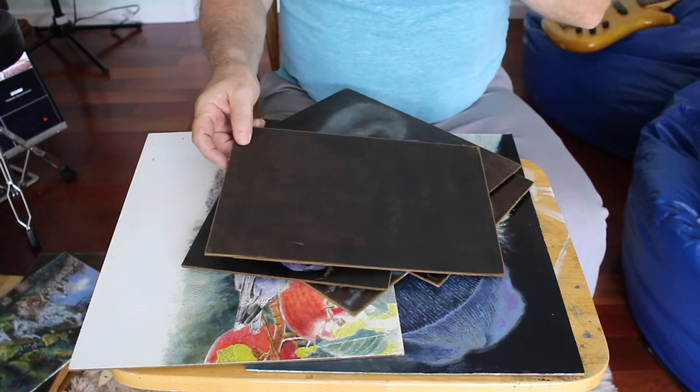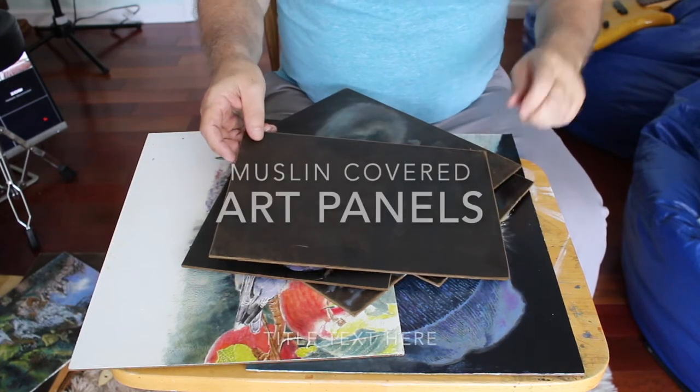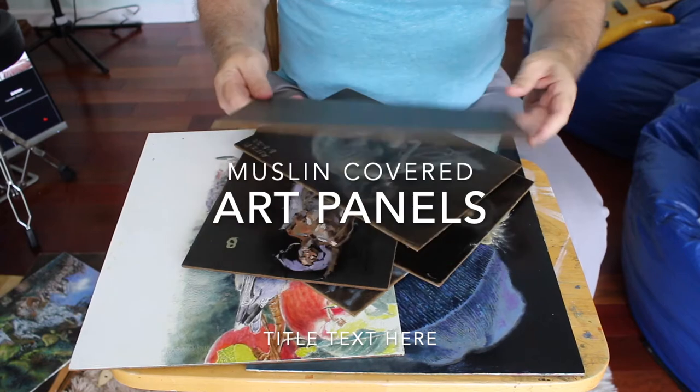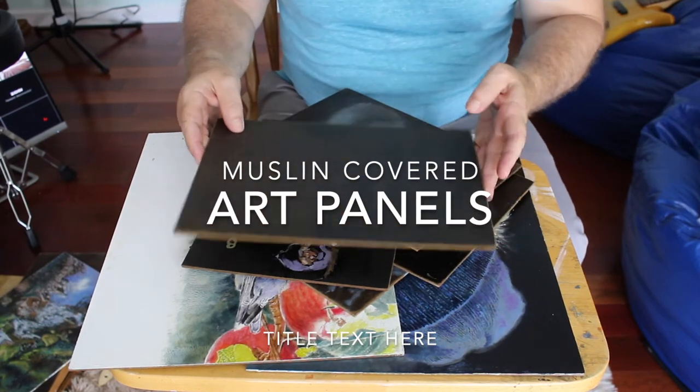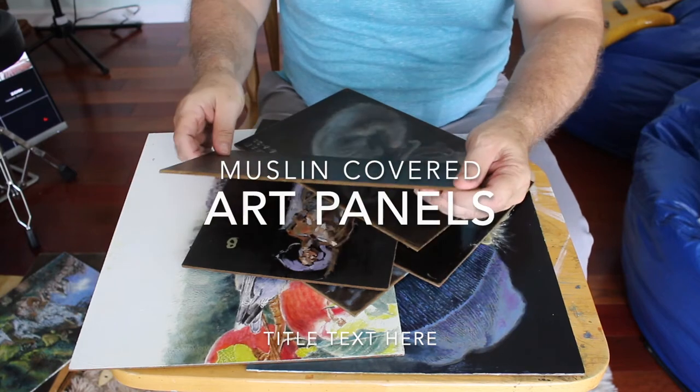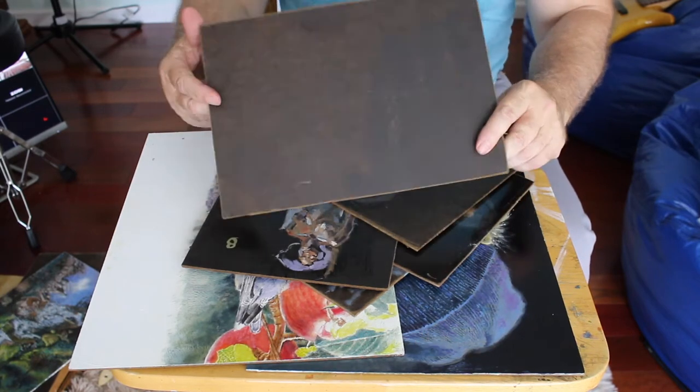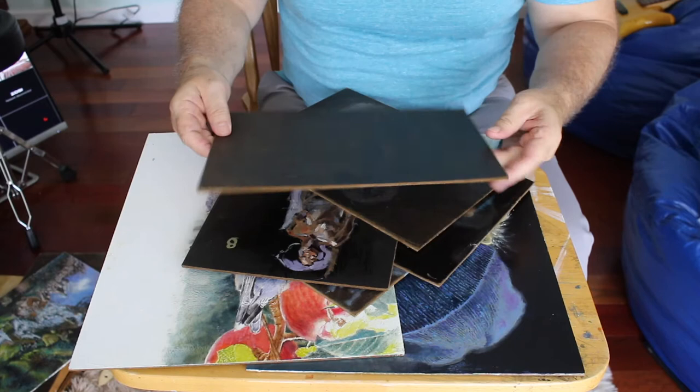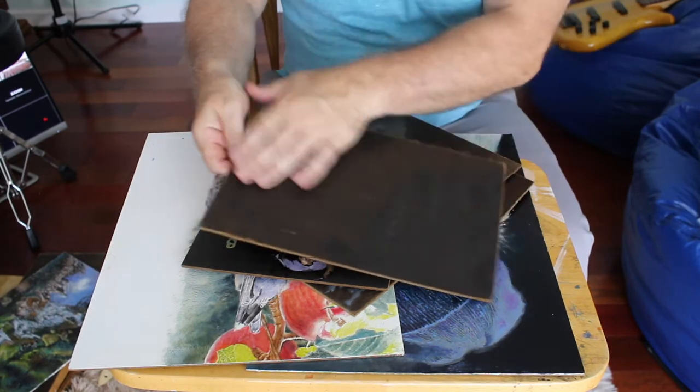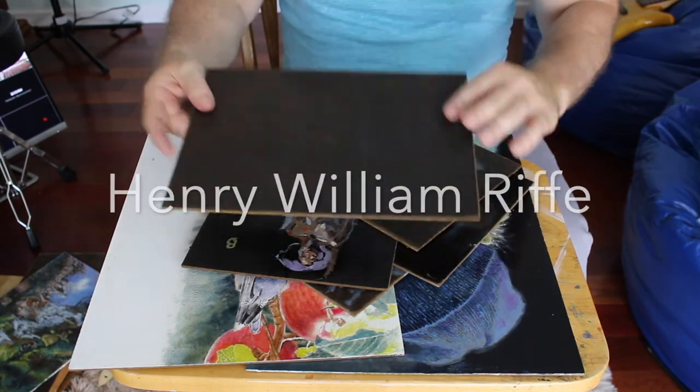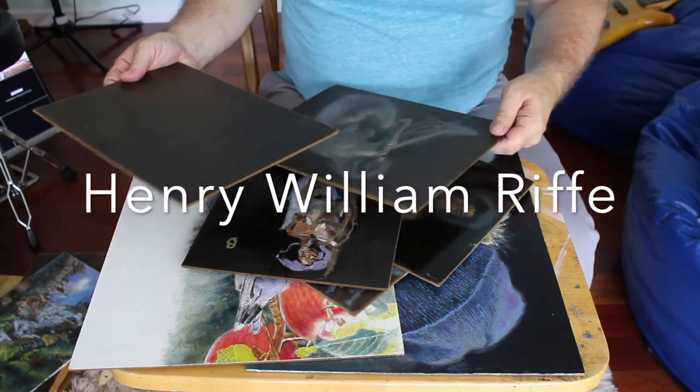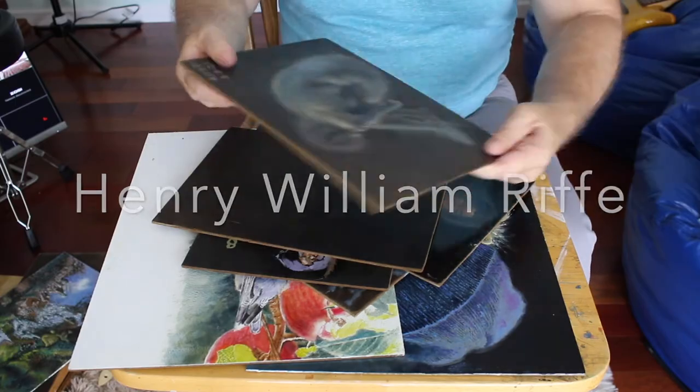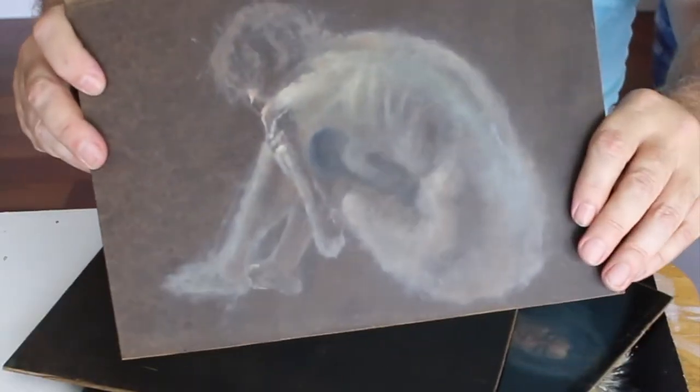Okay, I wanted to talk real quick about panels, about making your own panels and what I use. And this is Masonite 1/8 inch. I bought it in 4 by 8 foot sheets, cut them down. My original intentions were to do these figures on them.